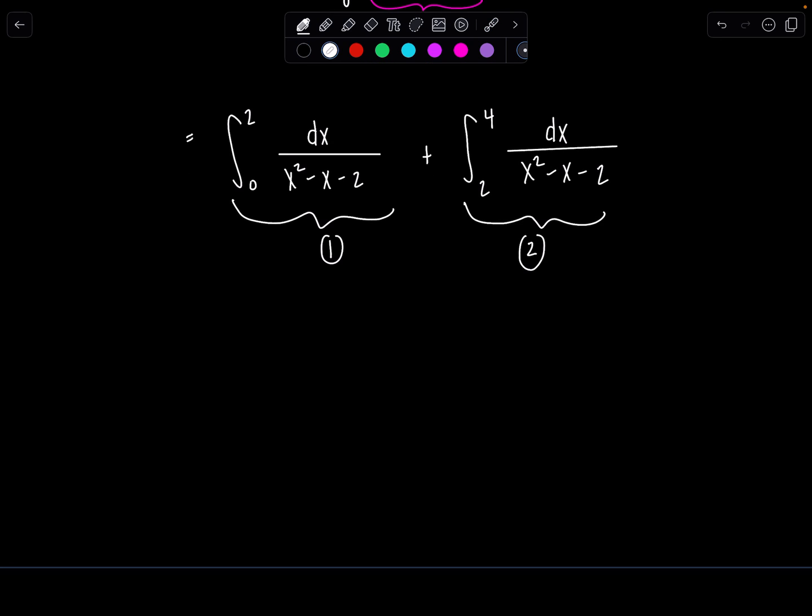So here we go. Let's just start off with the first one. We have integral 0 to 2, dx over, and then remember this factors into x minus 2 times x plus 1. Here's integral number 1. So now what I do is I replace that upper limit where the discontinuity is with some sort of dummy variable. Usually we use t or you can use a, something like that. So we're going to rewrite it as the limit as t approaches 2 from the left, and then now we have integral 0 to t of dx over x minus 2 times x plus 1.